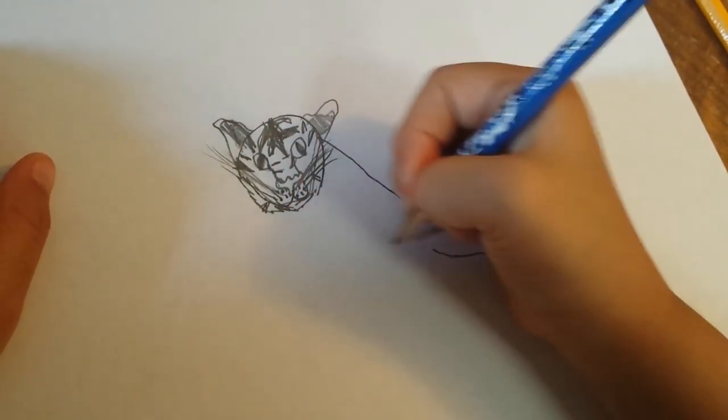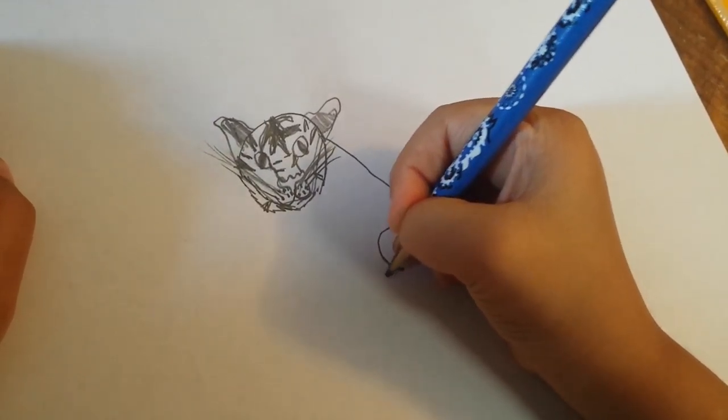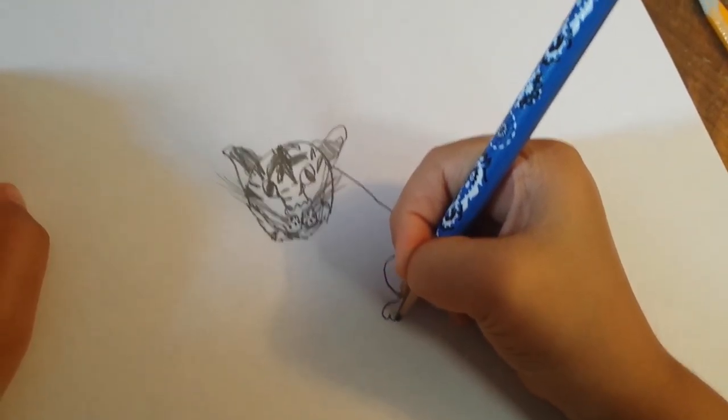up and stop there. That would be the tail. A little longer. And right here, you'll kind of do a zig-zag really close together.